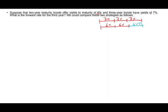Can we find the rate in the third year? Yes. The rate in year three should equal whatever compensates Investment B to be equivalent to Investment A over three years. Because per the expectations theory, if those bonds have the same risk, over a three-year period they should equal each other.